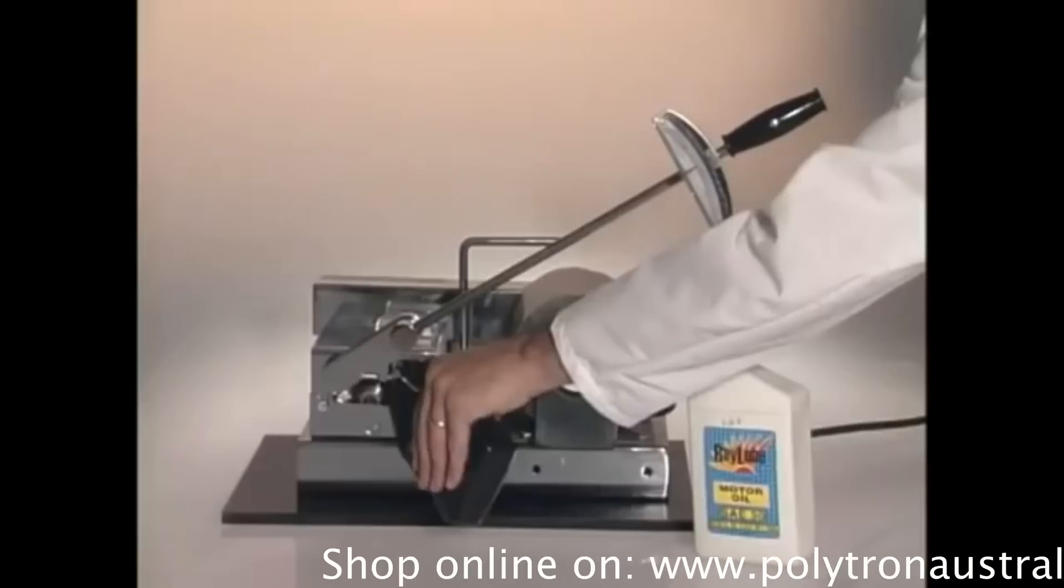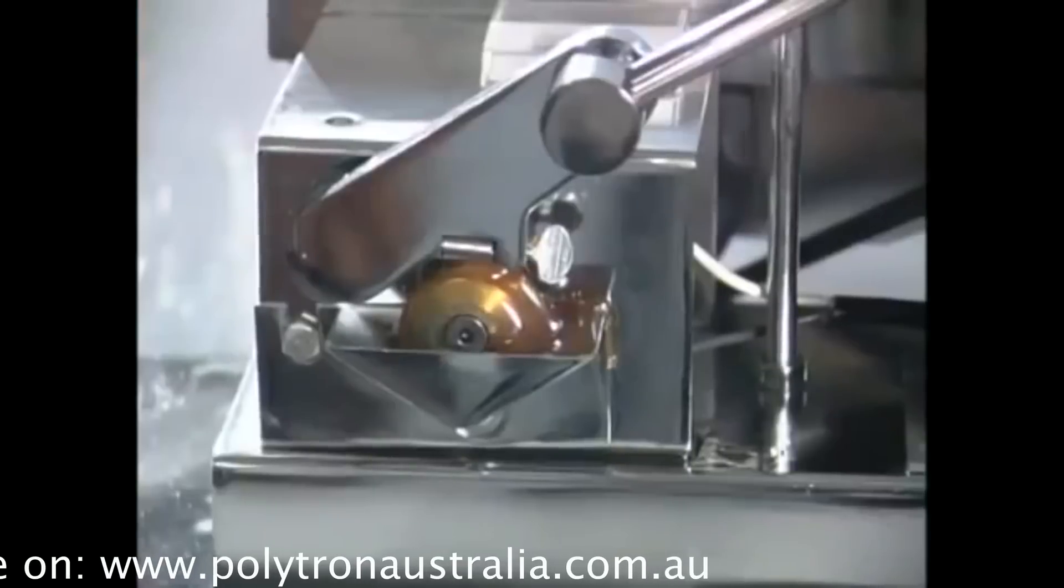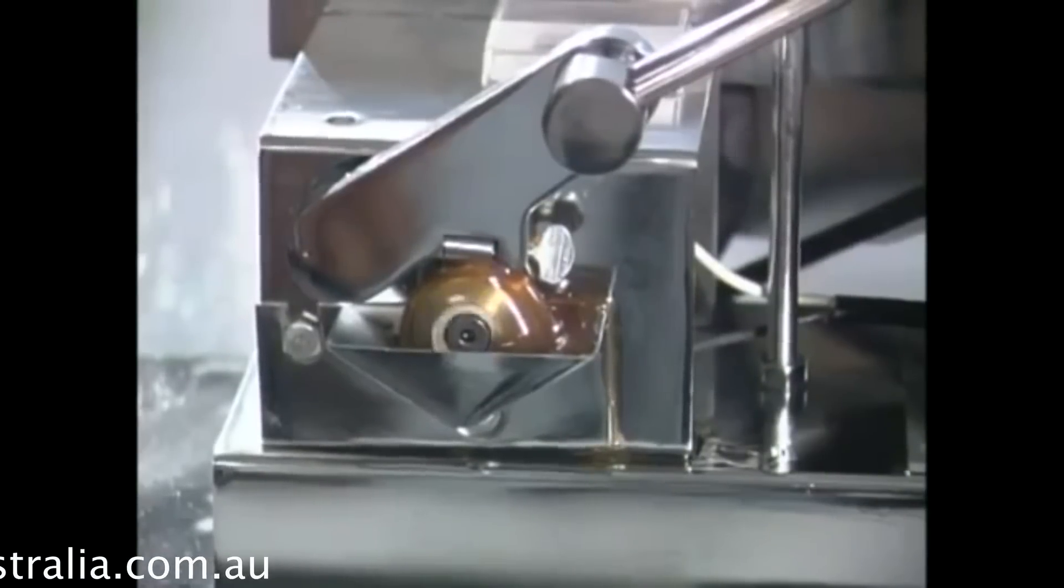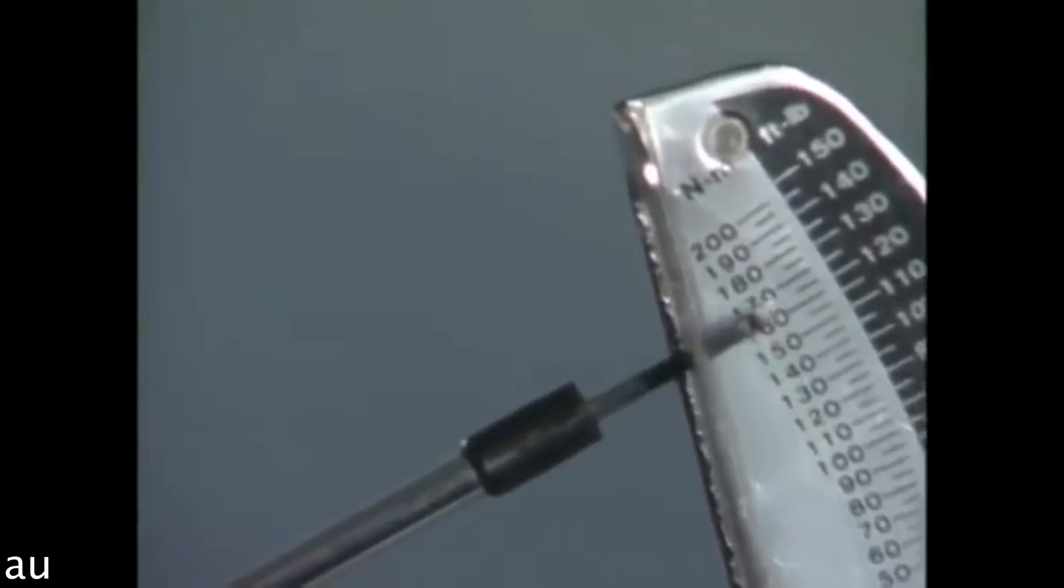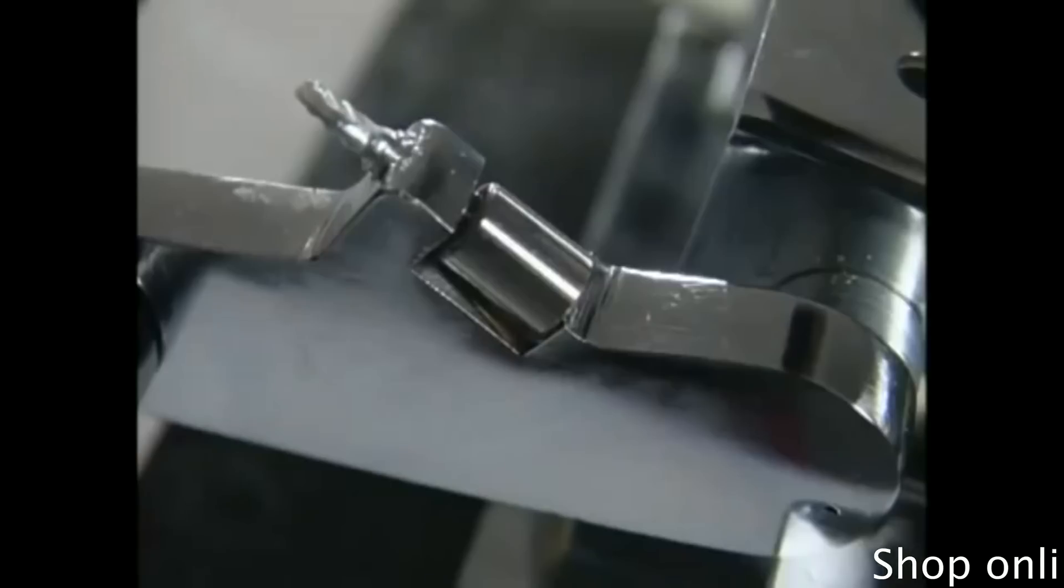This time, we will add Polytron lubricant concentrate to a low-cost generic oil. As we apply pressure to the torque wrench, we hear no change in the sound due to Polytron's bonding capabilities. Even at over 150 pounds of torque, the bearing does not seize up. Close inspection shows very little scoring.